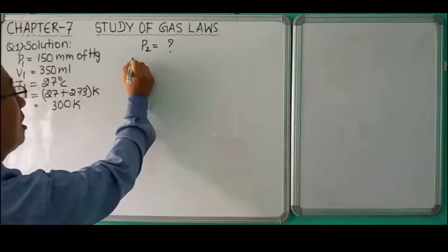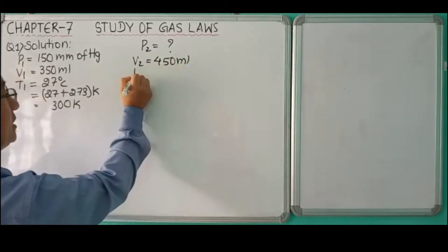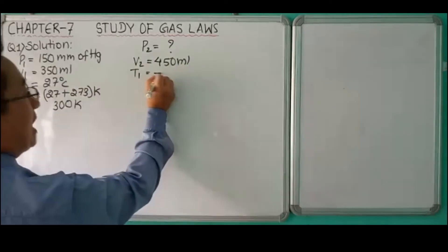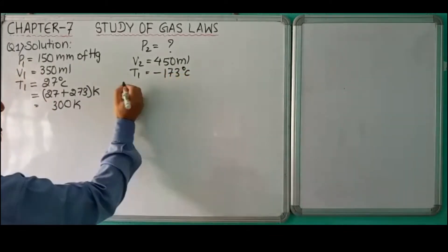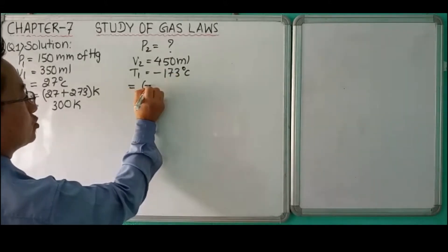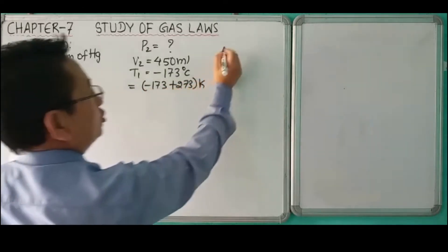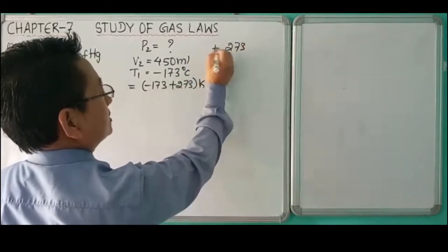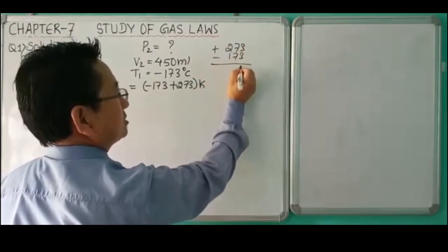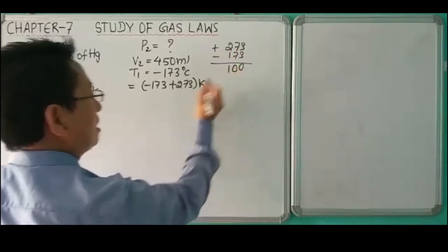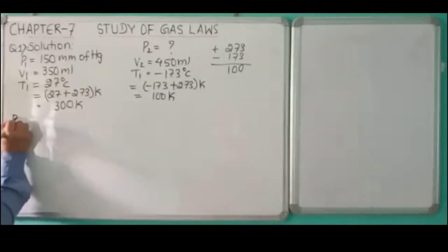V2 is given as 450 milliliter and T2 is given as minus 173 degrees Celsius. We'll convert this into Kelvin: minus 173 plus 273 equals 100 Kelvin. We'll solve by using gas equation.